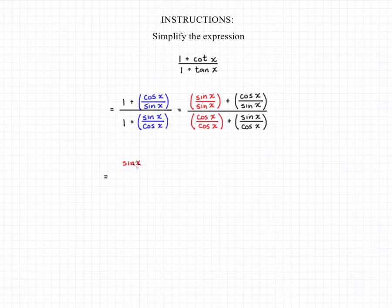So now if we combine the fractions in the numerator by adding, we'll have sine of x plus cosine of x all over sine of x. And now if we combine the fractions in our denominator by addition, we'll end up with cosine of x plus sine of x all divided by cosine of x.